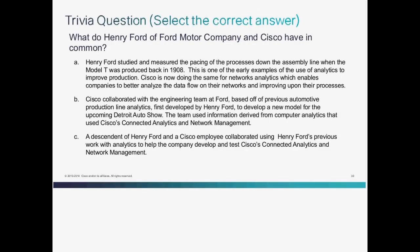We have a trivia question: what do Henry Ford of Ford Motor Company and Cisco have in common? Option A: Henry Ford studied and measured the pacing of processes down the assembly line when the Model T was produced in 1908 — one of the early examples of using analytics to improve production, and Cisco is now doing the same for network analytics. Option B: Cisco collaborated with Ford's engineering team based on previous automotive production line analytics. Option C: a descendant of Henry Ford collaborated with a Cisco employee using Henry Ford's previous work with analytics.